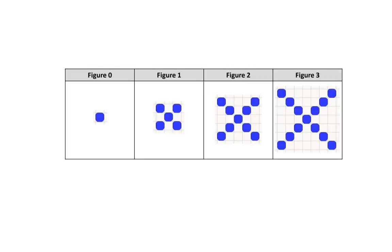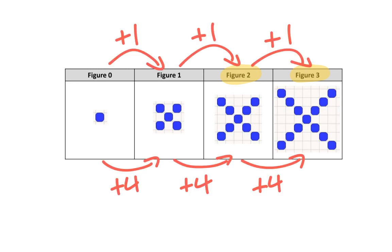In a previous lesson, we extrapolated the number of blocks in figure 3 and we interpolated the number of blocks in figure 2. You may have also noticed the rate of change was an increase of 4 blocks for every 1 figure. The initial value is also 1 block, since that is the number of blocks in figure 0.